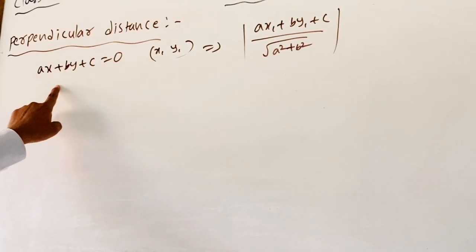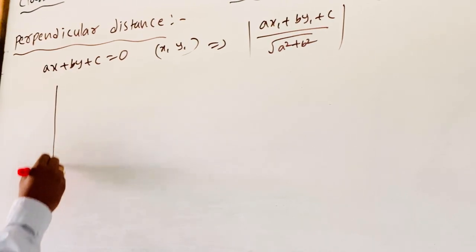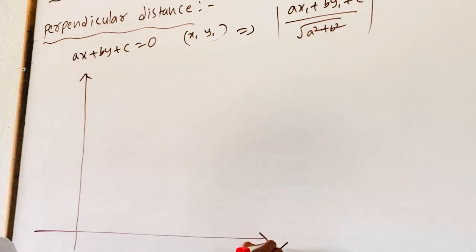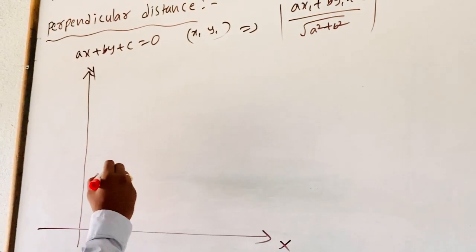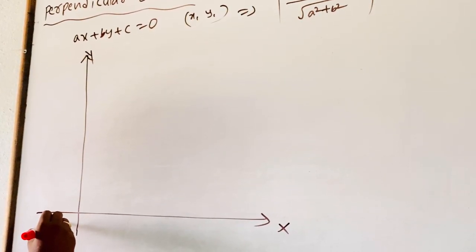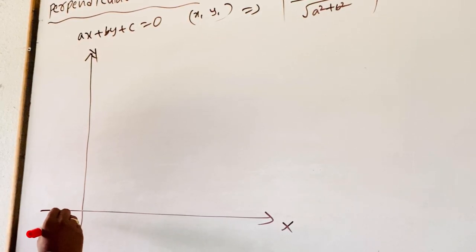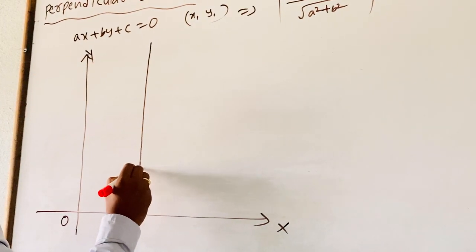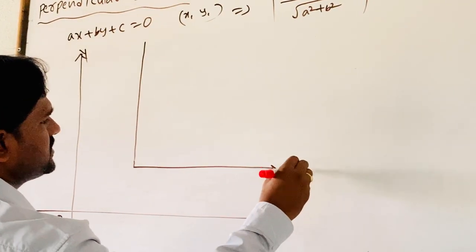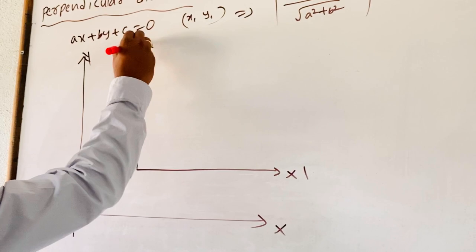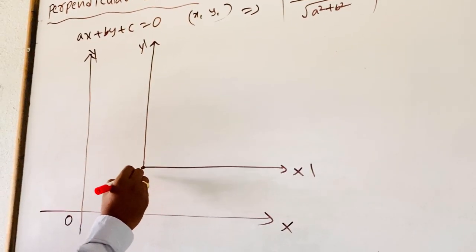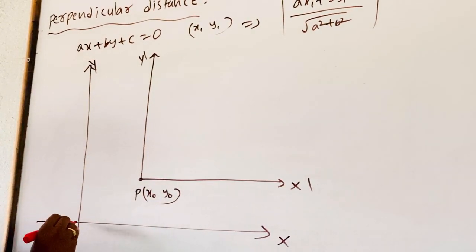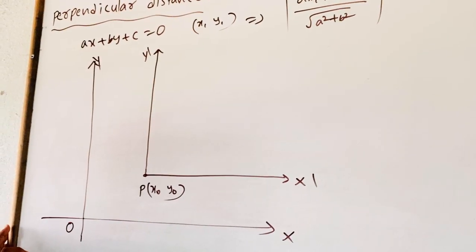From that condition, we will get the perpendicular distance of a line. So let us draw two coordinate axes X and Y, and we are transforming the origin to another point without changing the direction of the coordinate axes. That is the X dash and Y dash system, with the new origin at point P (X naught, Y naught). This is known as a translation of axes.